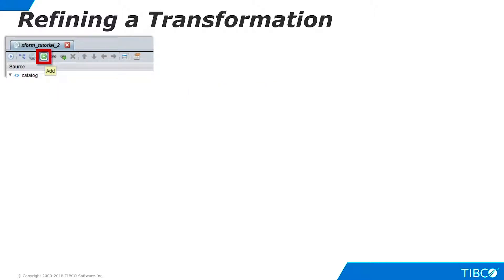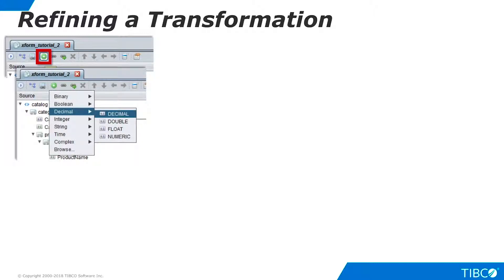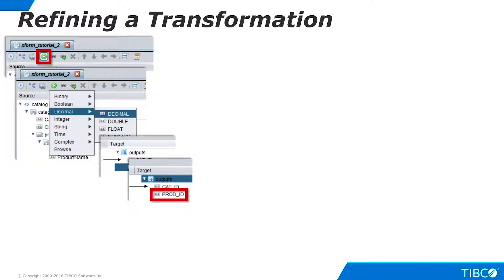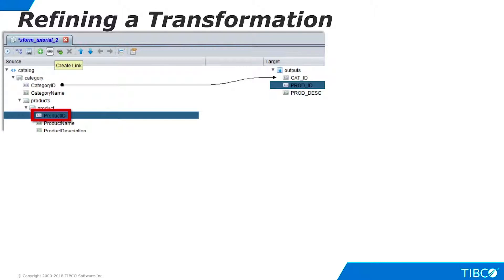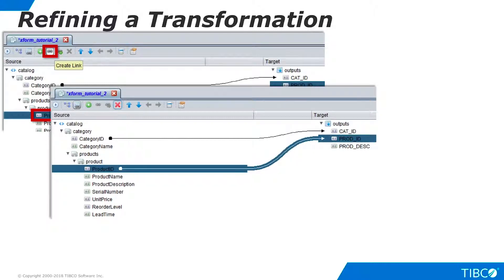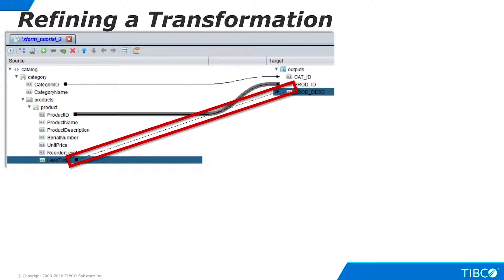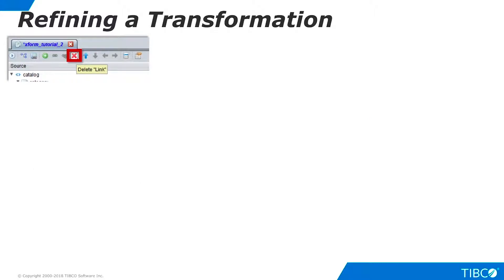We can also build a transformation by defining the output first. Click in the output area, then on the toolbar click Add, select a decimal data type, and an output column is created which you can rename — here we call it ProdID. Next, add a column and name it ProdDesc. Now that we have created two new output columns, return to the Source side of the editor and select the Product ID field. Click the Create Link icon. A link is created from the input Product ID to the first available output, which is ProdID. I can also use drag and drop to create a link. If I pick the wrong input field, I select Delete Link, confirm, and the link is removed.